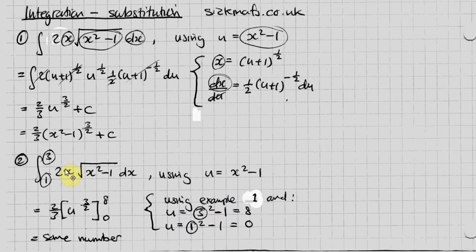So u equals 3 squared minus 1, so that 3 is this 3 here. u equals 3 squared minus 1, which is 8, so that turns into an 8. That 1, 1 squared minus 1 equals 0, so that 1 turns into a 0. Stick that in. It doesn't matter what the number is. I just said some number is the answer. Well, it's not really. There is a number that is the answer. Whatever. And that is it.